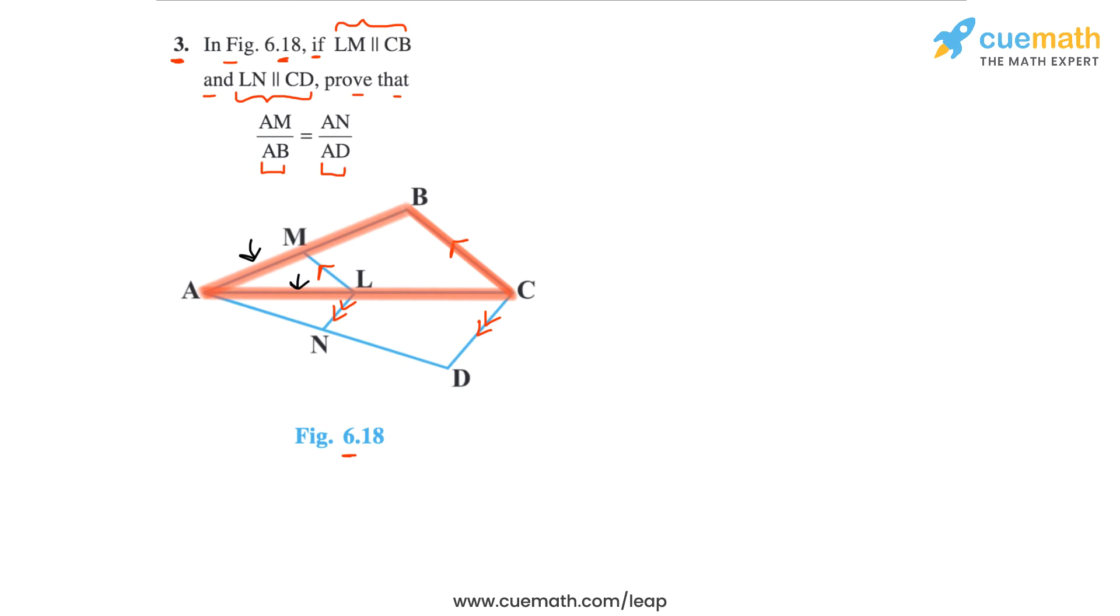Then, we will apply the basic proportionality theorem to triangle ADC, since LN is parallel to CD, and this will give us AN by the whole segment AD, also as AL by the whole segment AC.